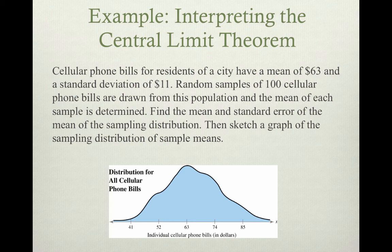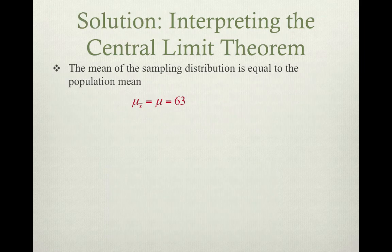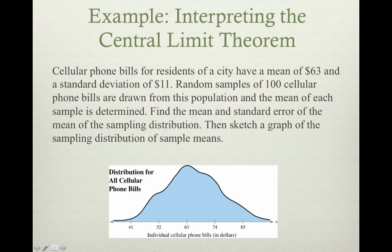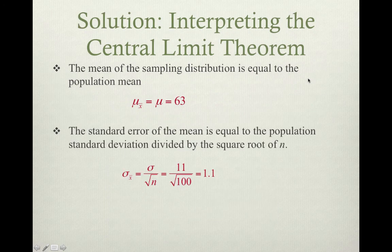Let's go through some examples. Cellular phone bills for residents of a city have a mean of $63 and a standard deviation of $11. Random samples of 100 cellular phone bills are drawn from this population and the mean of each sample is determined. Find the mean and standard error of the mean of the sampling distribution, then sketch a graph. We know that the mean of the sampling distribution is equal to the population mean — so once we're given the population mean of $63, we know the mean of the sampling distribution.